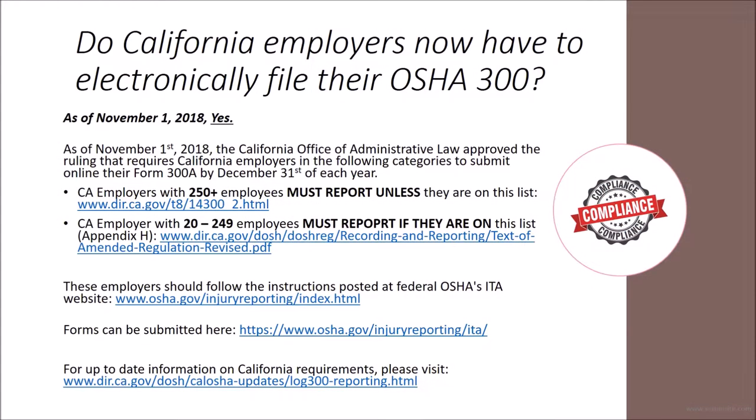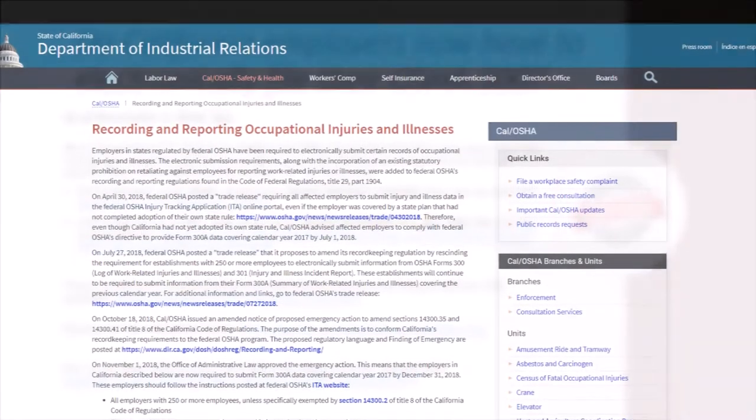As of November 1st, 2018, the California Office of Administrative Law approved the ruling that requires California employers in the following categories to submit their Form 300A online by December 31st of each year.